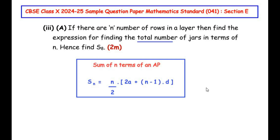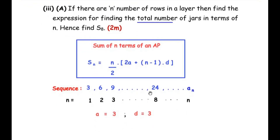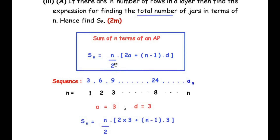The sequence was 3, 6, 9, ... till 24 jars over 8 layers. We now extend to n layers, where the nth layer has aₙ jars. The first term a = 3 and common difference d = 3. We plug in values of a and d into the formula, keeping n as a variable to generate a general expression: Sₙ = (n/2) × [2×3 + (n−1)×3].